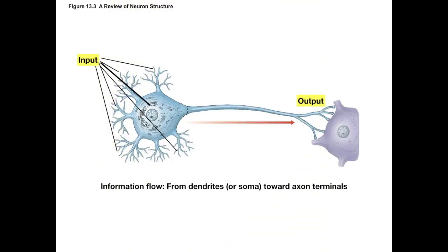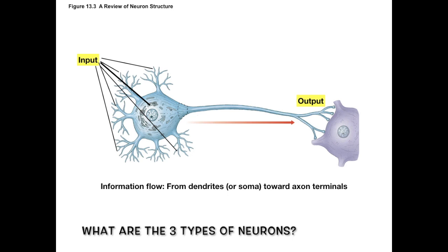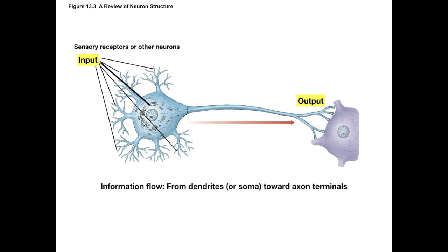We're going to move on to those three basic types of neurons. I'm going to describe these functional categories based on a neuron's input and output — that is, which other cells these neurons are communicating with. The neuron receives signals or input on the dendrites as well as the cell body; that input might be coming from other neurons, or it might be coming from receptors that detect some kind of external or internal stimuli.